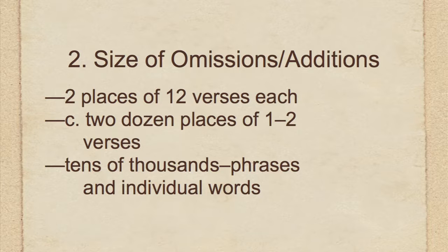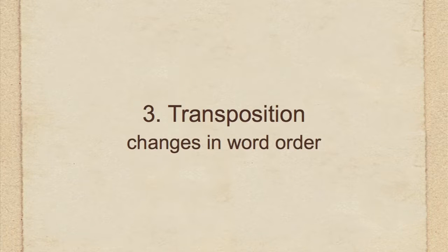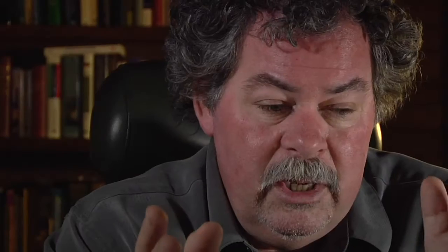Besides omissions and additions, there are three other kinds of textual variants. One is a transposition, which has to do with word order change — for example, just two words, where it's 'Jesus Christ' versus 'Christ Jesus.' That's a typical textual variant we see in Paul's letters. Did he write 'Jesus Christ,' or did he write 'Christ Jesus'? Those words are transposed very frequently among the manuscripts.